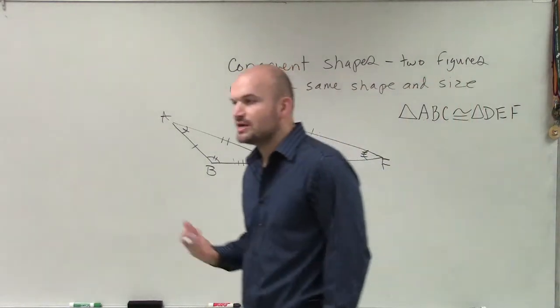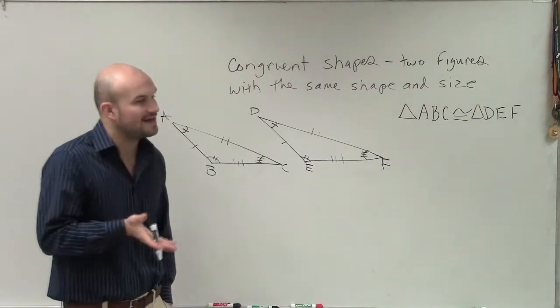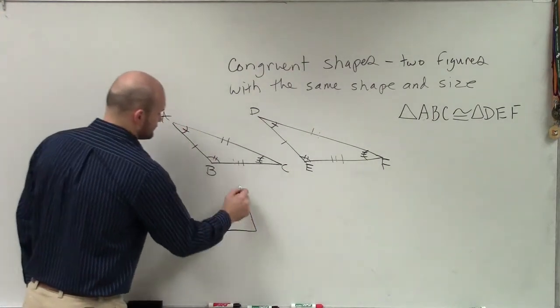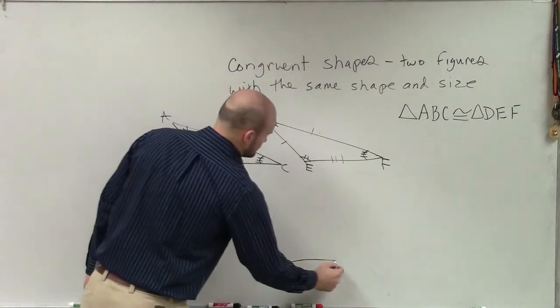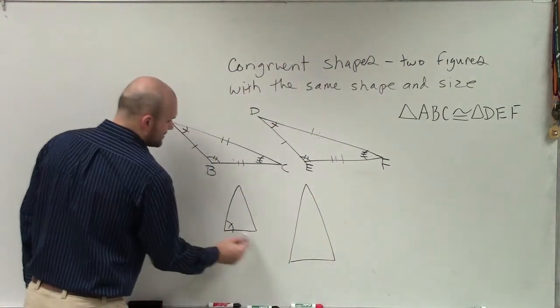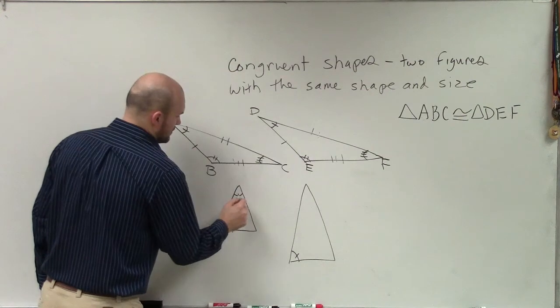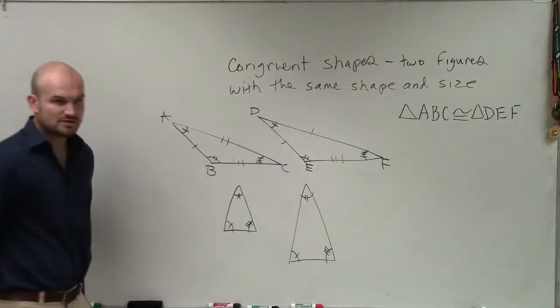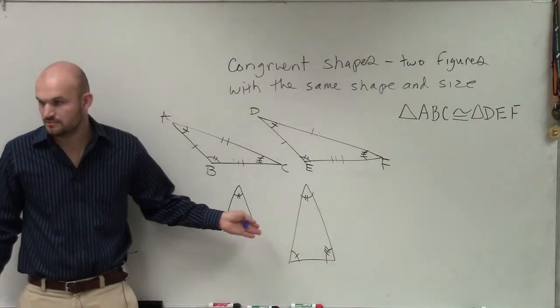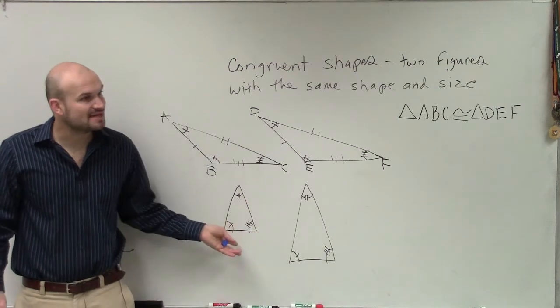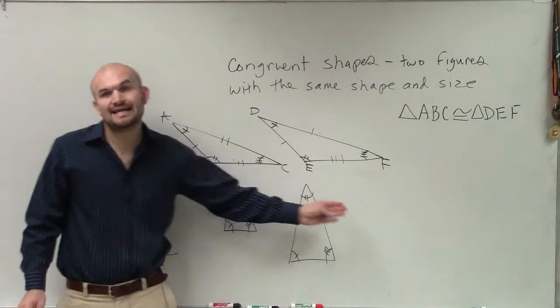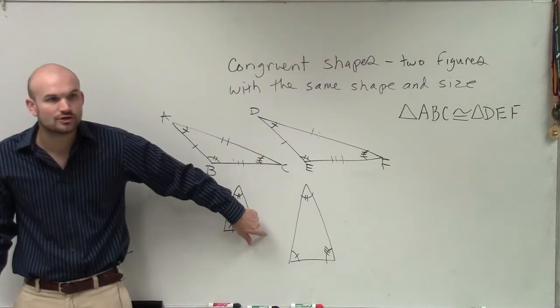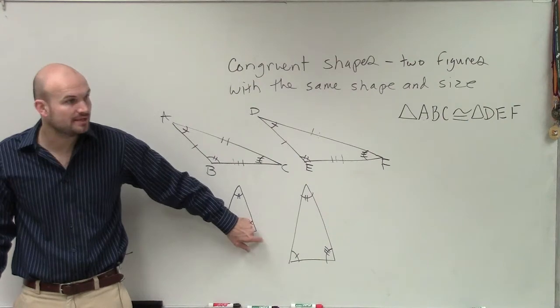And just remember, when we're talking about congruency, we want to make sure that they have the exact same size and shape. Now, a couple things. Here, these triangles look very similar, don't they? They have the same shape. The angles have the same size. However, are the side lengths congruent or equal to each other? No. So therefore, these are not congruent. These would not be congruent.